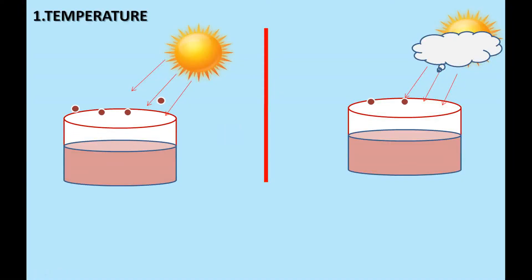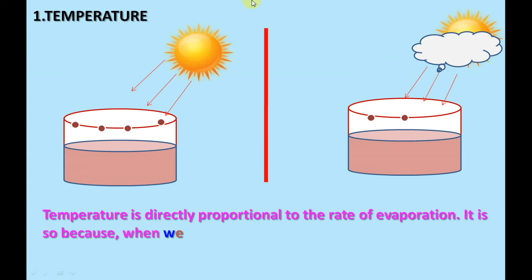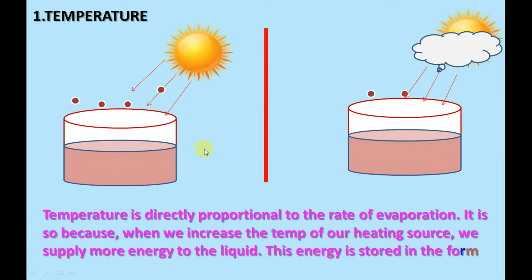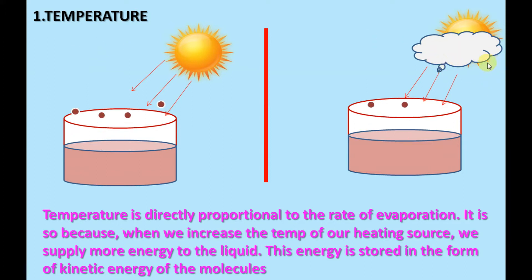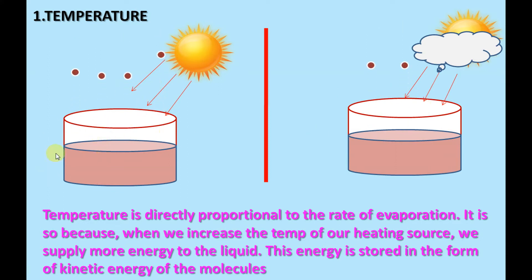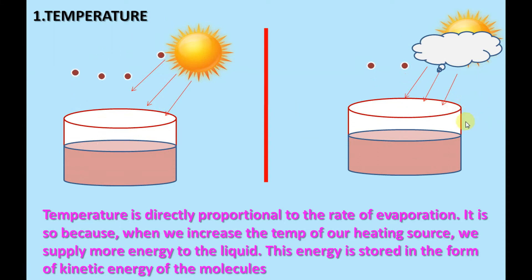The first factor is temperature. Here, the first beaker is placed under a very sunny day, and the second beaker is placed on a cloudy day. In the first beaker, more liquid molecules are evaporating and escaping from the surface of the liquid. In the second one, on a cloudy day, fewer molecules escape, because temperature is directly proportional to evaporation — the rate of evaporation is directly proportional to temperature.